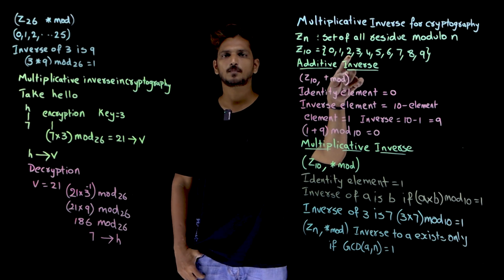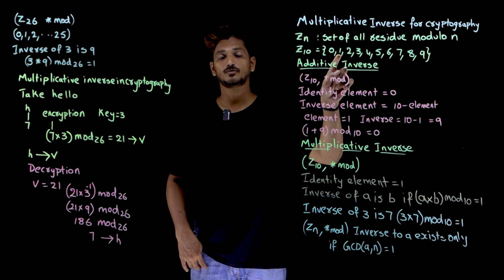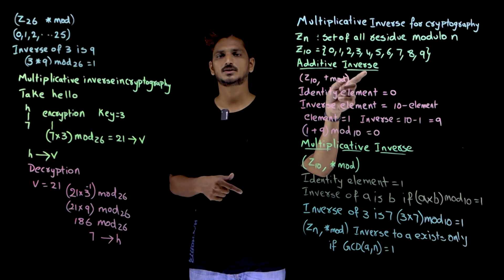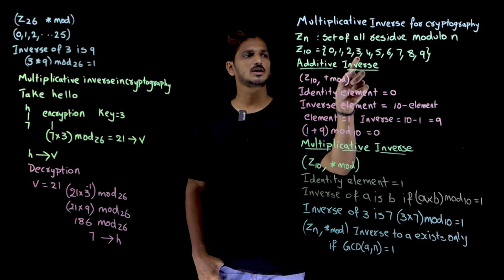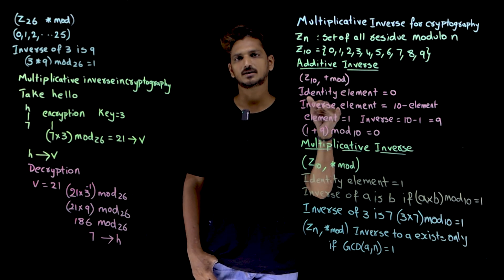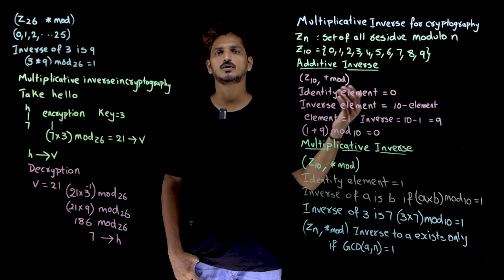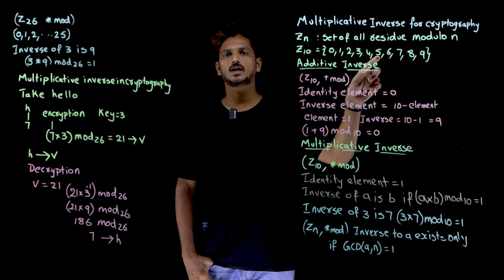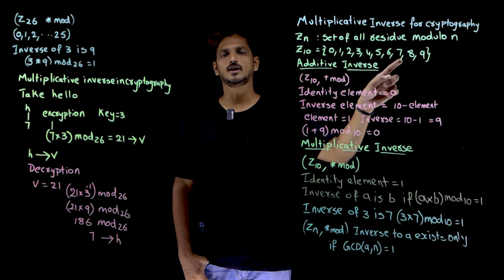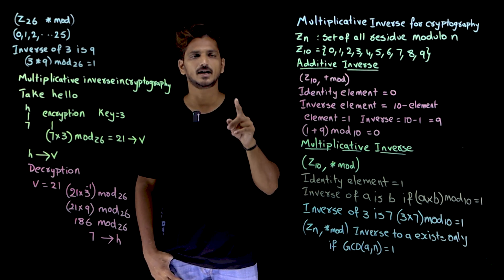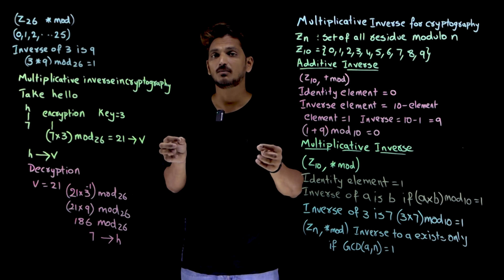Let us try to understand this. If you take 2, the inverse element does not exist for multiplication modulo. Checking: 2×1 mod 10 = 2 (not 1), 2×3 mod 10 = 6 (not 1), 2×4 mod 10 = 8 (not 1), 2×5 mod 10 = 10 mod 10 = 0 (not 1), 2×7 mod 10 = 14 mod 10 = 4 (not 1), 2×9 mod 10 = 18 mod 10 = 8 (not 1). So for the number 2, we do not have an inverse element in multiplication modulo.